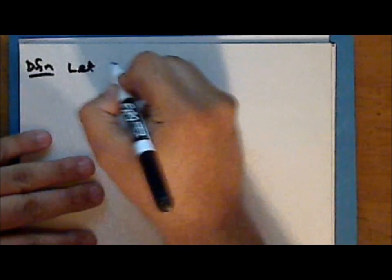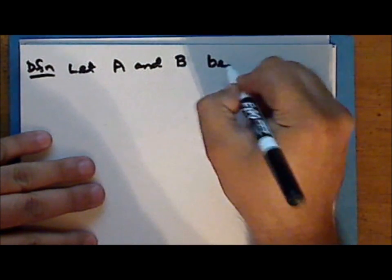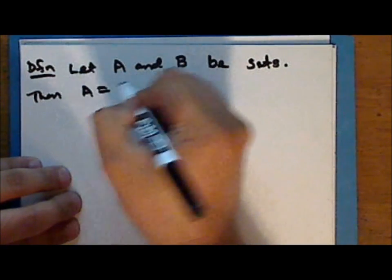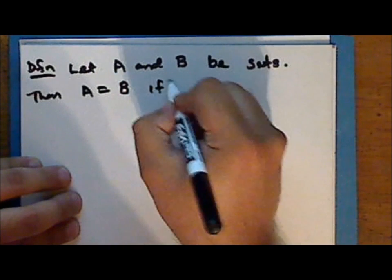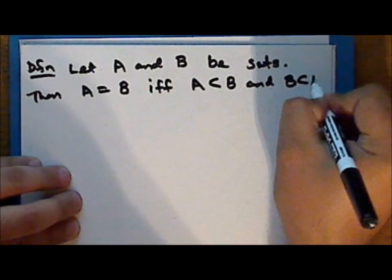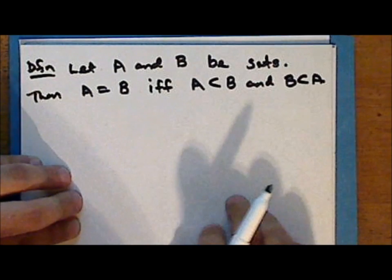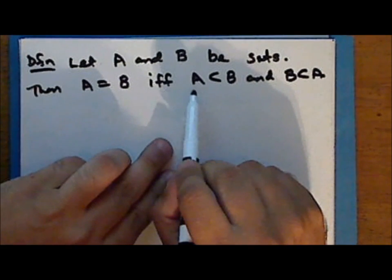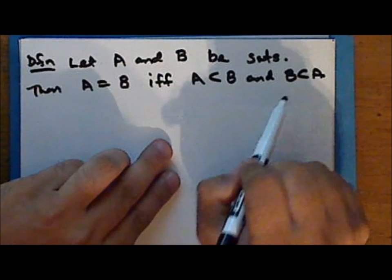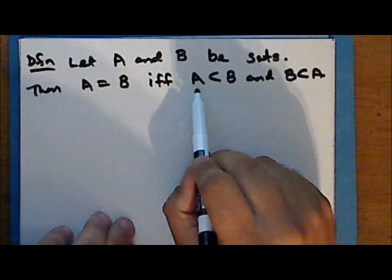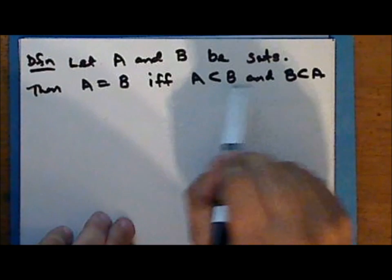Now a new definition. Let A and B be sets. Then the set A is equal to the set B if and only if both A is a subset of B and B is a subset of A. So the condition that two sets are equal is equivalent to the condition that each set is a subset of the other. To prove that two given sets are equal, we must demonstrate set inclusion in both directions.